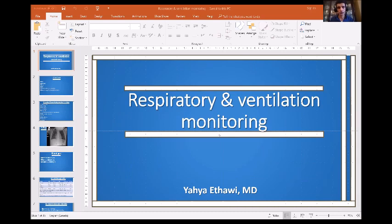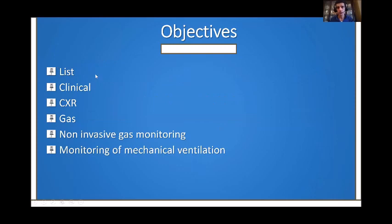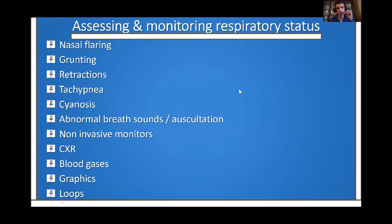My objective in this talk is to give you a list of tools to monitor ventilation and respiration, with a short glimpse on the clinical part. We'll talk about the x-ray, blood gas, non-invasive gas monitoring, and monitoring mechanical ventilation. Clinically, you can assess respiration by looking at nasal flaring, grunting, retractions, tachypnea, and cyanosis. You can auscultate breath sounds, use non-invasive monitors like respiratory monitors, heart rate, and oxygen saturation, do chest x-ray, blood gases, and look at graphics and loops.